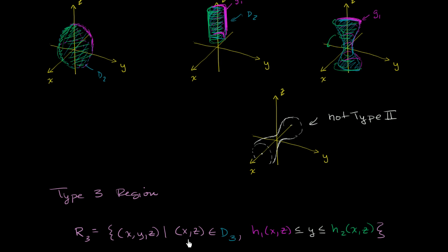What could be our domain for the sphere? The domain is a set of x, z pairs, so it's going to be in the x, z plane. Our domain could be this region right here in the x, z plane — I'll color it in. And then the lower bound on y will be the part behind the sphere, and the upper bound on y is going to be this side right over here.